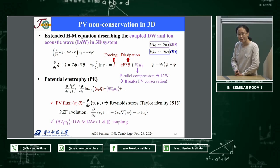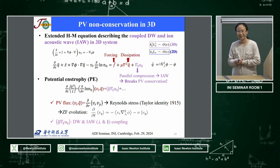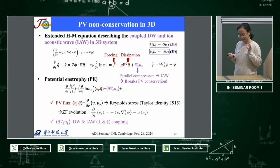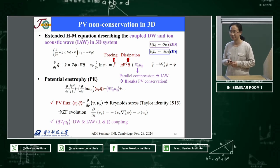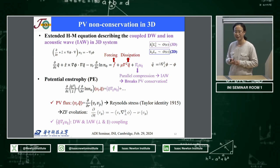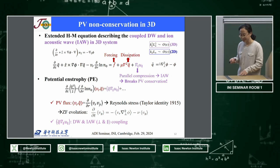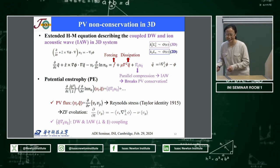An audience member notes: if you include the pressure equation, you could construct a generalized potential vorticity including the effect of pressure which would still be conserved. The speaker clarifies: here we use the cold ion limit but add the parallel direction with the ion-acoustic wave, which only requires finite electron temperature. This generalized conservation is something the speaker is currently investigating and invites further discussion.